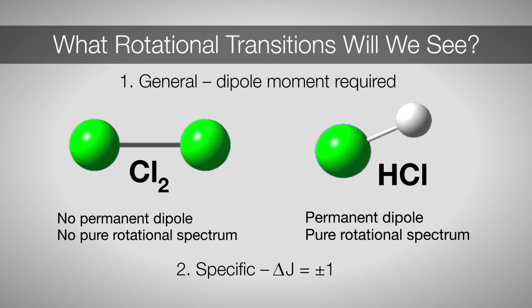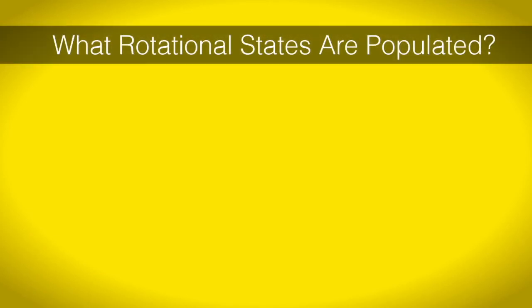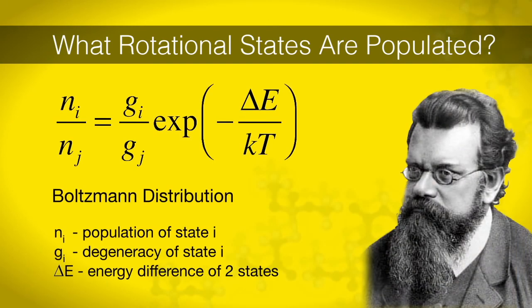If we want to know what levels are expected to have population, and therefore appear in our spectrum, we return to the Boltzmann distribution. However, we recognize that the energy spacings are much smaller than the vibrational spacings. The Boltzmann distribution tells us that there is a greater amount of molecules in an excited rotational state when compared to vibrations.